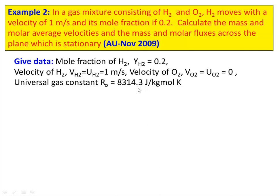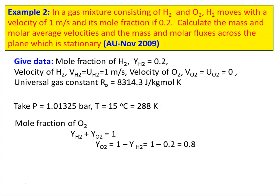Given data: Mole fraction of hydrogen YH2 = 0.2. Velocity of hydrogen = 1 m/s. Velocity of oxygen = 0. Universal gas constant = 8314.3 J/kg·mol·K. Pressure = 1 bar, temperature = 15°C = 288 K. We take the standard temperature. Mole fraction of O2: YO2 = 1 − YH2 = 1 − 0.2 = 0.8.